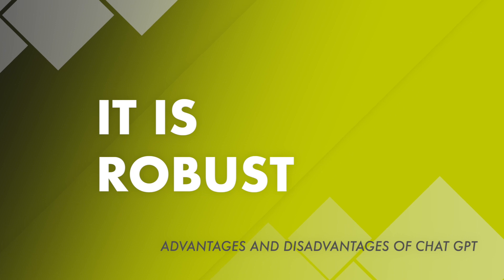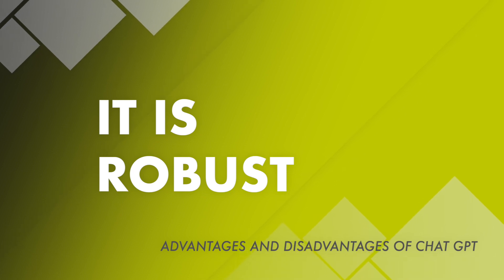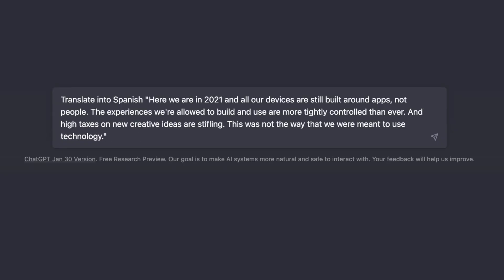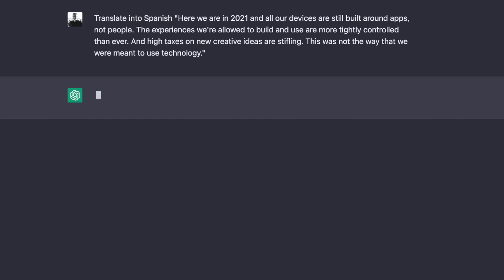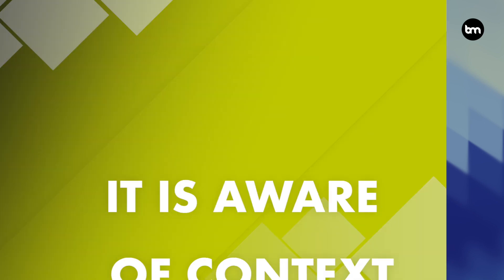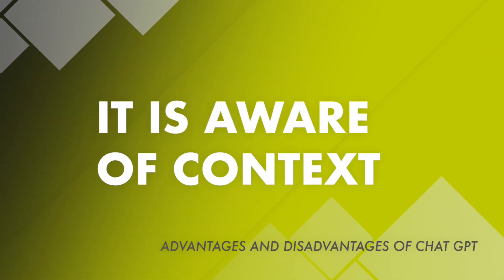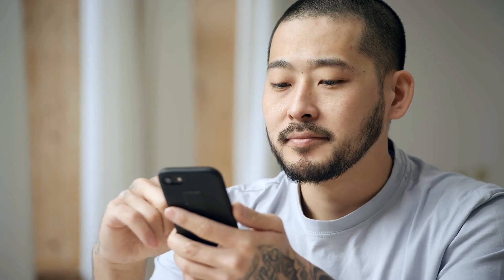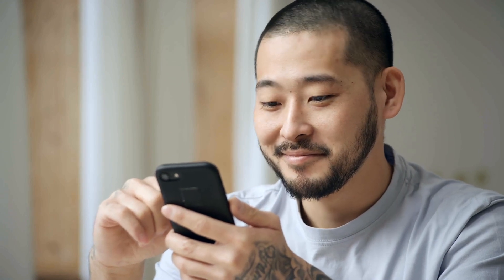It is robust. ChatGPT has the ability to handle a wide variety of topics and question types, making it suitable for a wide range of applications. It is also aware of context — ChatGPT has the ability to maintain context across multiple turns in a conversation, which enables it to provide relevant and coherent responses even in complex scenarios.